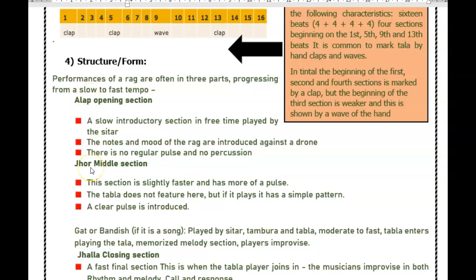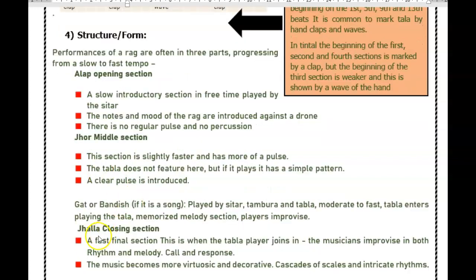Then I have the jor — the middle section where there is more of a pulse. The section is slightly faster and the tabla does not feature here, but if it plays it has a simple pattern and then a clear pulse is introduced. Before the closing section I have the gat — if it's a song or bandish — played by sitar, tambura, and tabla.